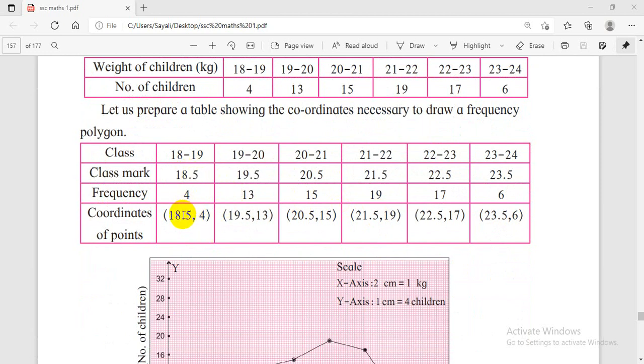The corresponding points will be (17.5, 0), (18.5, 4), (19.5, 13), (20.5, 15), (21.5, 10), (22.5, 17), (23.5, 6). These are the coordinates of the points.